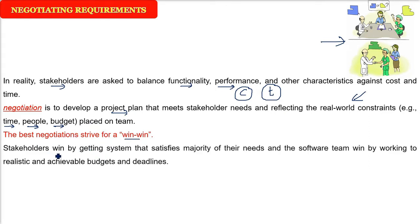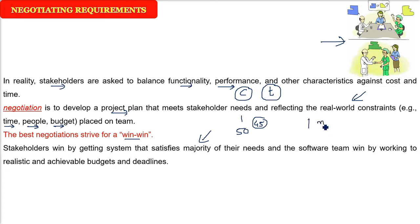Stakeholders win when the majority of their needs are being fulfilled. For example, if there are 1 to 50 requirements, and you have completed 45 — use cases completed. And how does the software team win? The software team has a budget; they are provided a deadline. For example, 1 million dollars is given and 2 years of time is given. So under 1 million in 2 years, if the software team completes and delivers the majority of the requirements, both win.